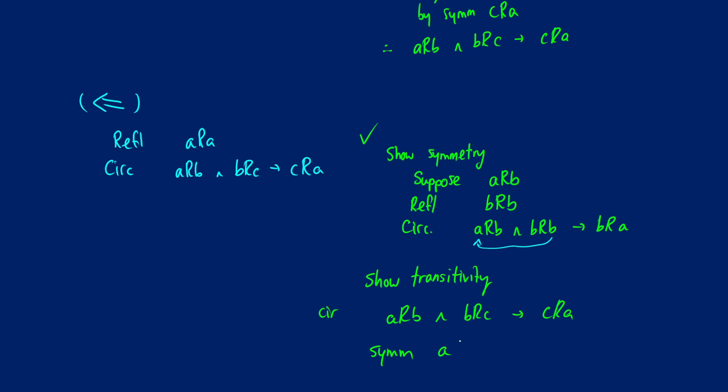So if we use symmetry on this, because we have cRa, what we get is aRc out of it. So if we have aRb and bRc, we're going to get aRc, and therefore it's transitive.